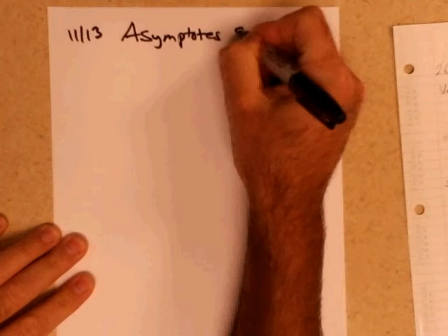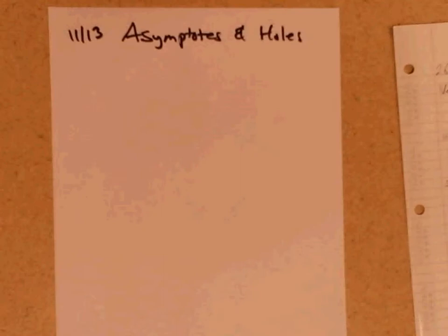Today's date is the 13th and we have what's referred to as asymptotes and holes. So we're moving into graphing rational functions.